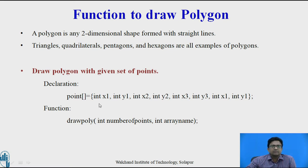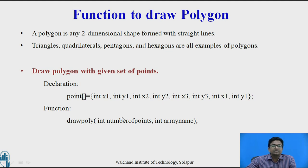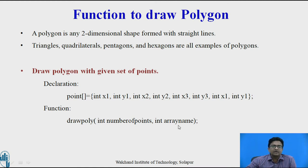The number of points parameter specifies how many points we have used in the above array. We need to specify that number of points and the name of the array, which is 'point'. We will now see the example.